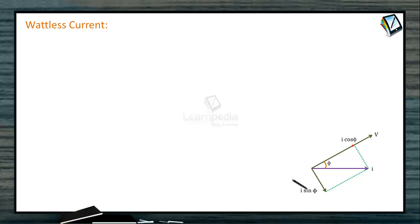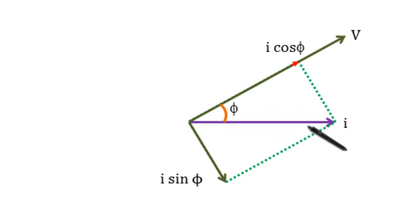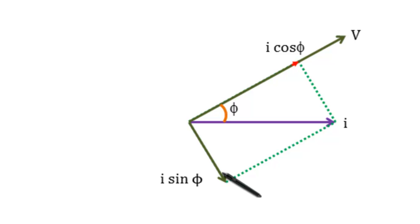Wattless current. In an AC circuit, R is equal to zero, cos phi will be zero, so average power will be zero. That is, in a resistance-less circuit, the power consumed is zero. Such a circuit is called a wattless circuit, and the current flowing in it is called wattless current. The component of current which does not contribute to average power dissipation is called wattless current.